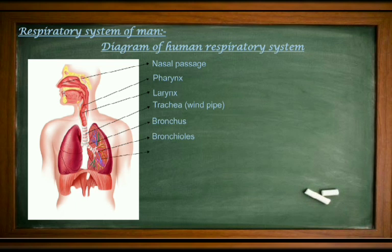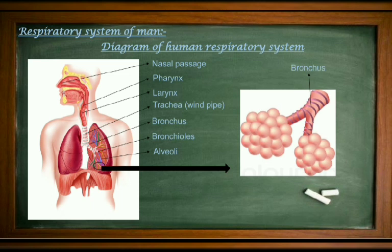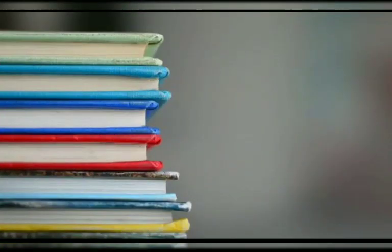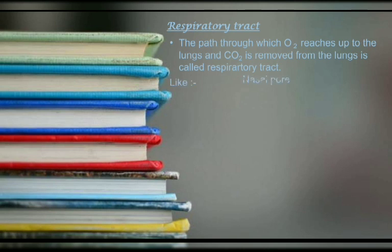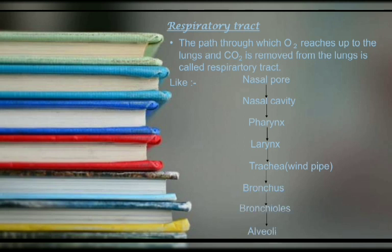The trachea divides into two branches called bronchi, which also have cartilaginous rings to prevent collapsing. Bronchi branch further into bronchioles. At the tip of the bronchioles are balloon-like or sac-like structures called alveoli — the functional unit of the lung. Alveoli help in exchanging gases, that is oxygen and carbon dioxide. The respiratory tract pathway is: nasal pore → nasal cavity → pharynx → larynx → trachea → bronchus → bronchioles → alveoli.